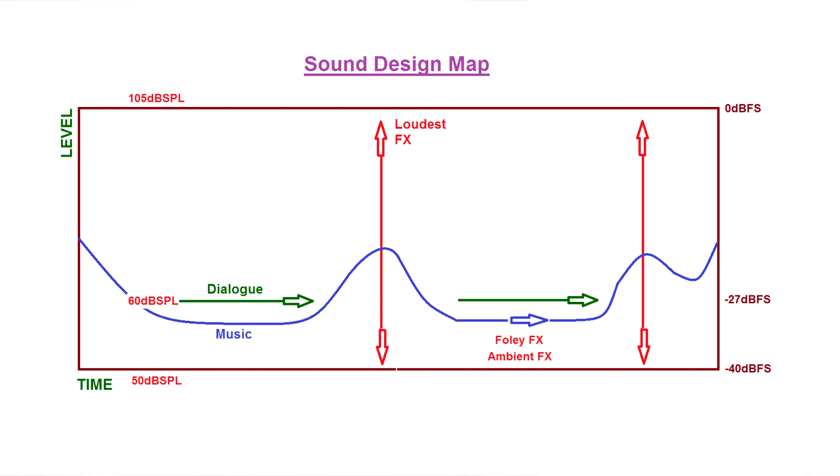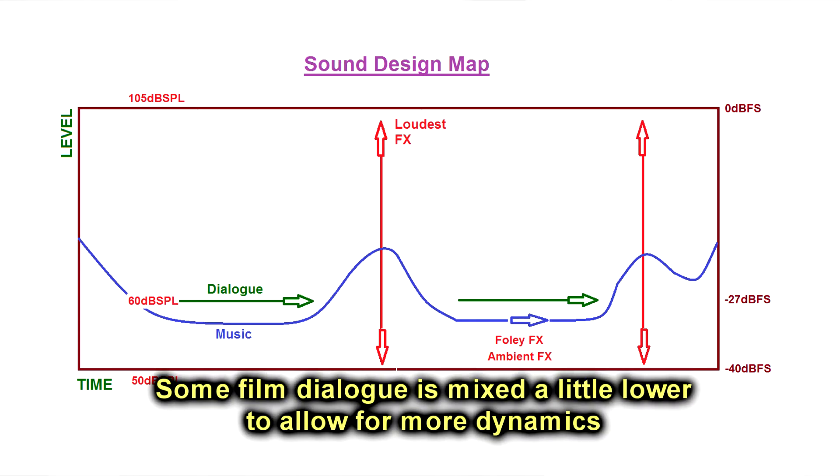As you see, the dialogue is average of minus 27 dB depending on how much you compress, how much you volume automate, and what type of EQ you have. The averages should be close to minus 30, between minus 25 and 30 for your dialogue.